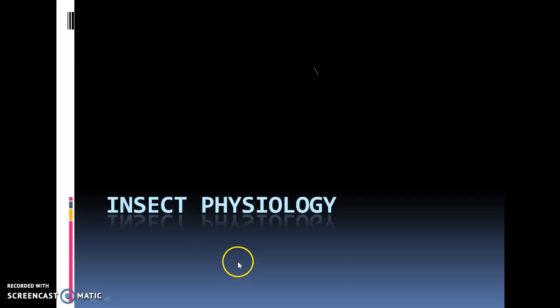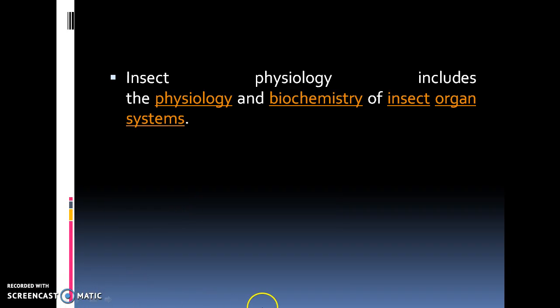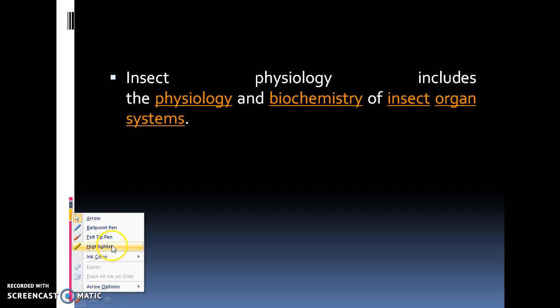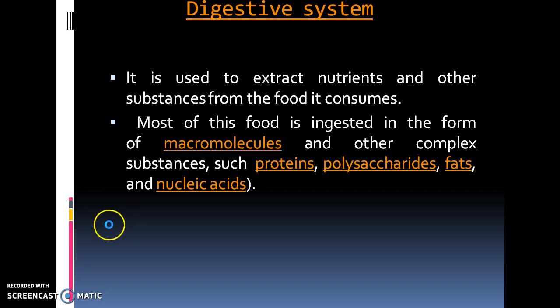Hello students, we are going to learn insect physiology today. Insect physiology includes the physiology and biochemistry of insect organ systems. Particularly we are going to deal with the digestive system of an insect, which is used to extract nutrients and other substances from the food it consumes.